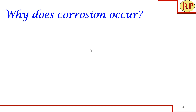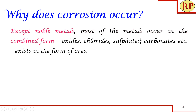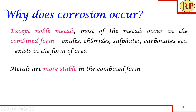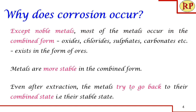We should understand why corrosion occurs — why should a metal undergo corrosion? How are metals found in nature? Are we getting copper or aluminium directly from nature? No. Except for some noble metals, most metals occur in the combined form, that is present as ores — as oxides, chlorides, sulfates, or carbonates. These metals are more stable in the combined form, so even when we extract the metals, any opportunity given to them, they will try to go back to the combined state. That is why corrosion occurs in metals.